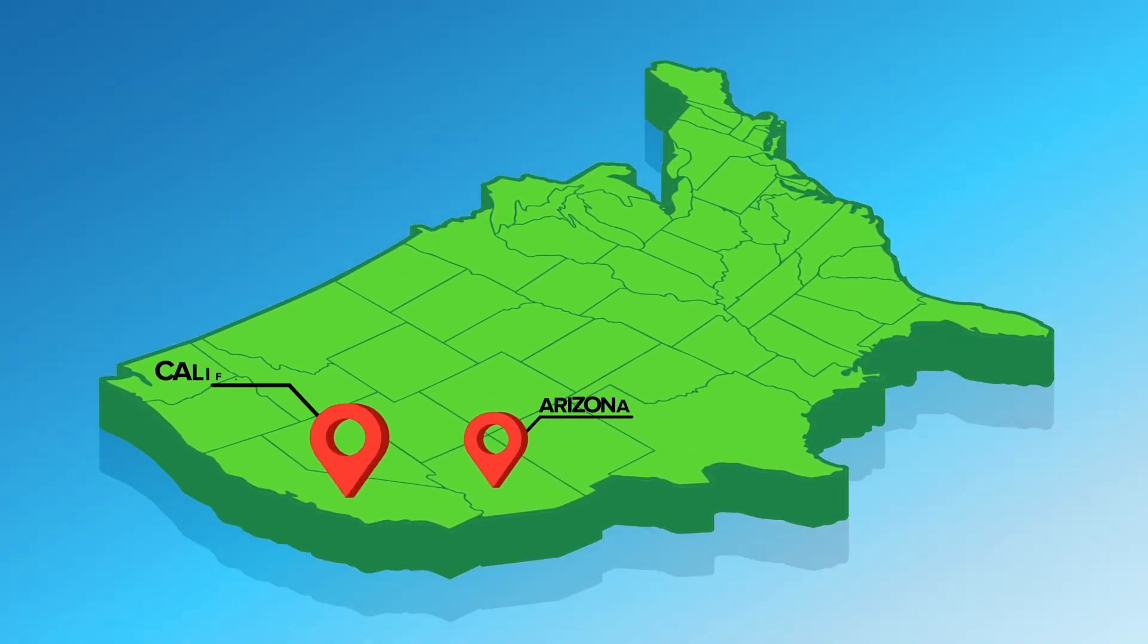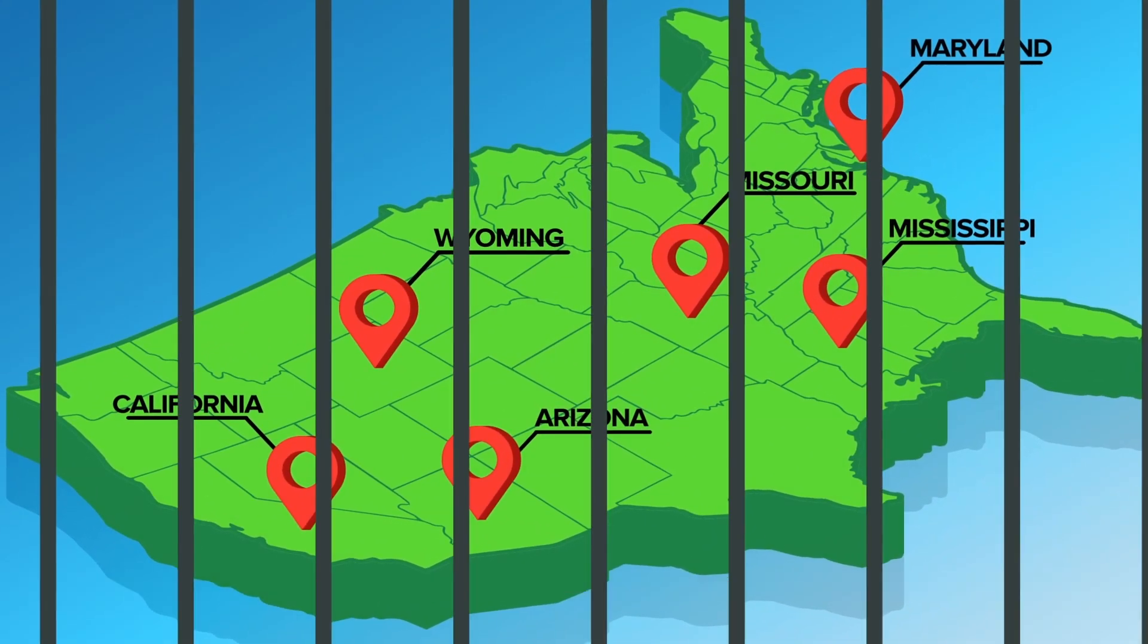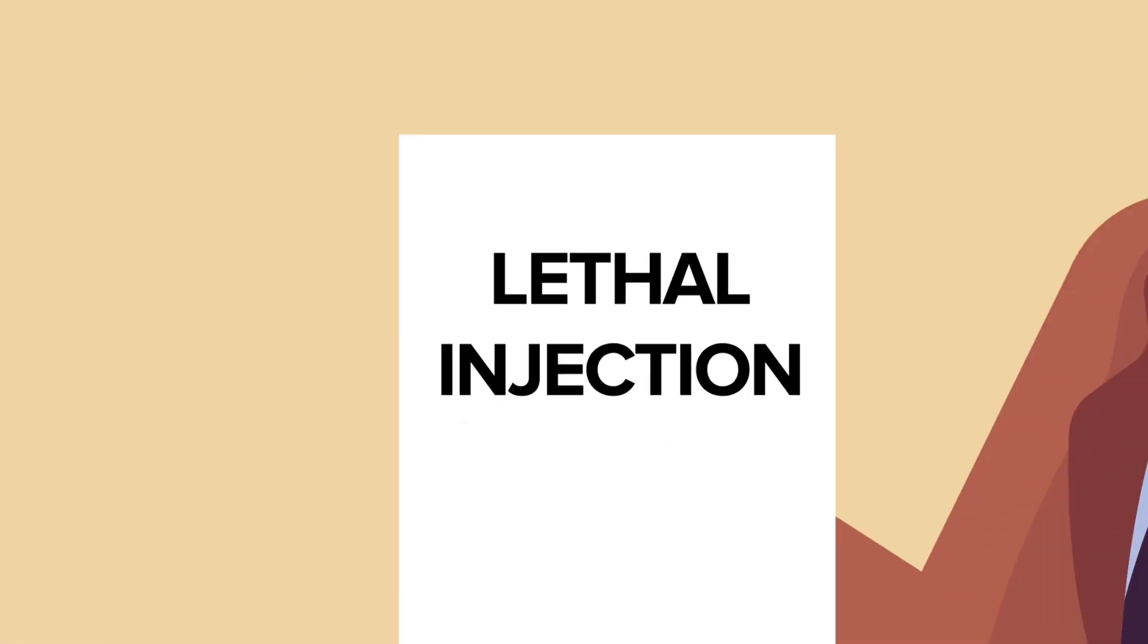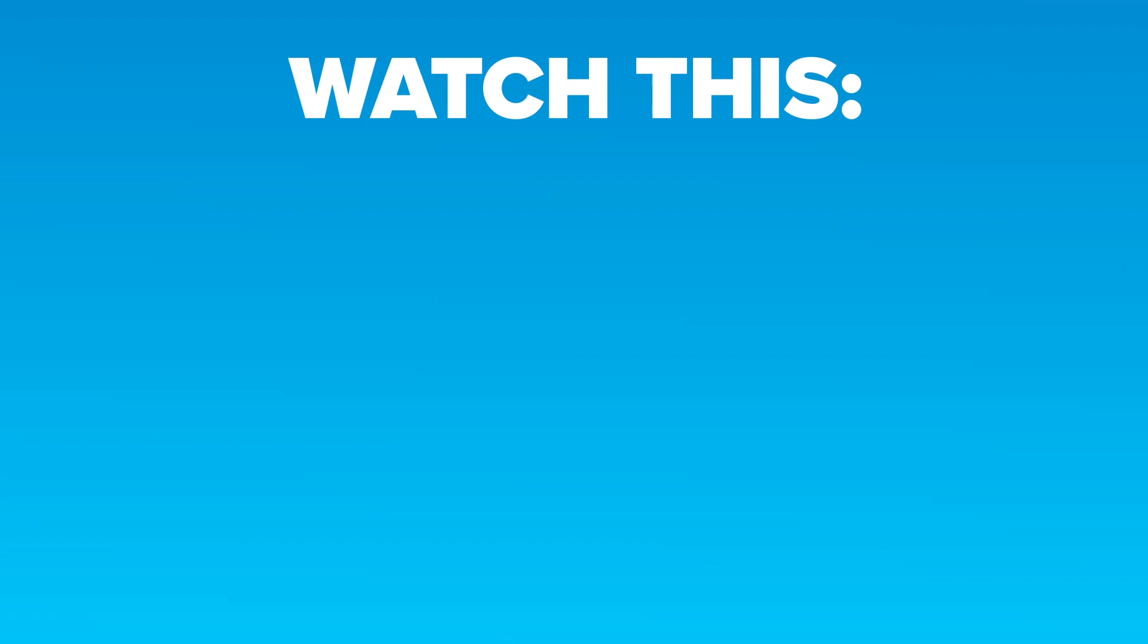Today, prisoners can still get the gas chamber in Arizona, California, Maryland, Mississippi, Missouri, and Wyoming, though only if lethal injection cannot be administered. With the effectiveness of lethal injection also in serious question however, states are once more looking for a new and humane method of execution. Now, go check out How Does Lethal Injection Work? What Happens If It Fails? Or click this other video instead!